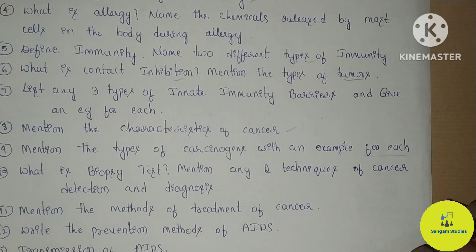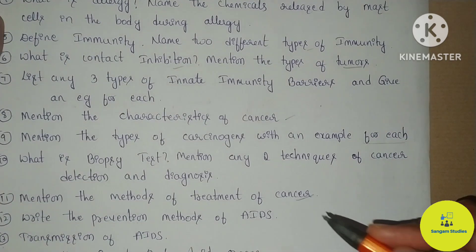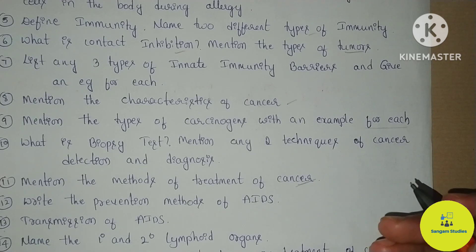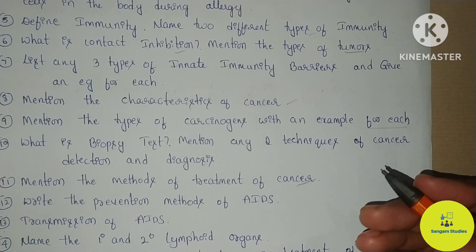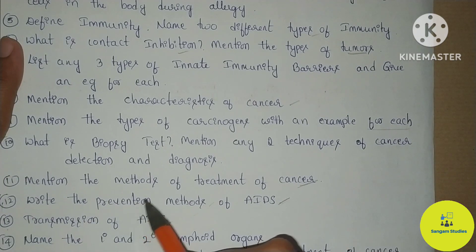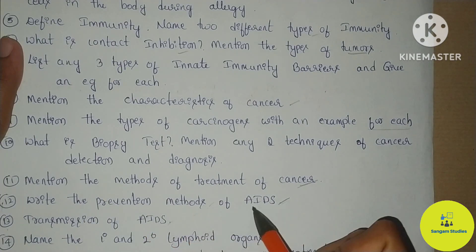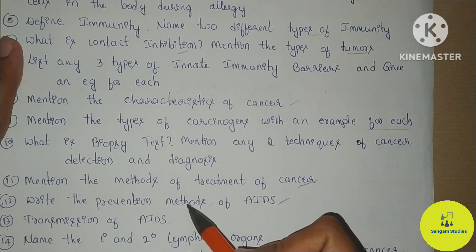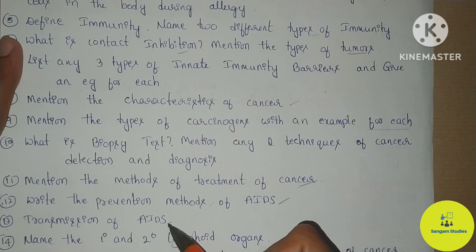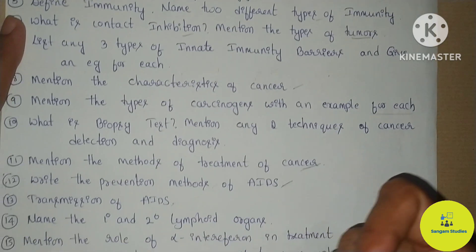Biopsy test: mention two techniques of cancer detection and diagnosis — 2 marks. Mention the methods of treatment of cancer. Write the prevention methods of AIDS, and how AIDS is transmitted.